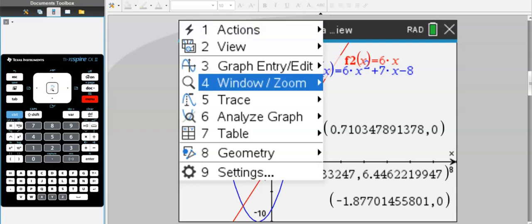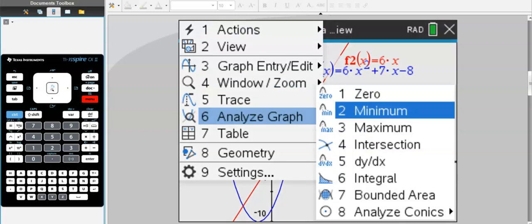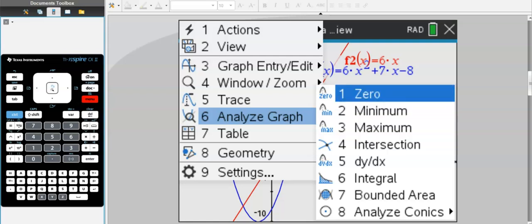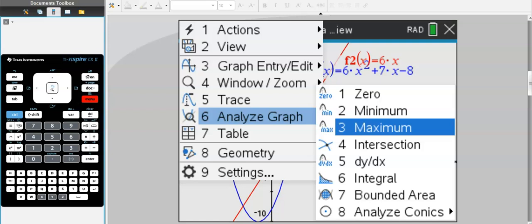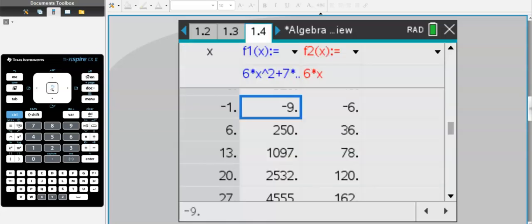Now if I want to analyze my graph, I can go to menu, analyze graph, and then use the instructions given after you click on any of these. An intersection will require two graphs or more, and then you have 0, minimum, and maximum. Some graphs do not have a minimum or do not have a maximum. For instance, this graph here does not have a maximum because it always goes to infinity. Let's keep moving.